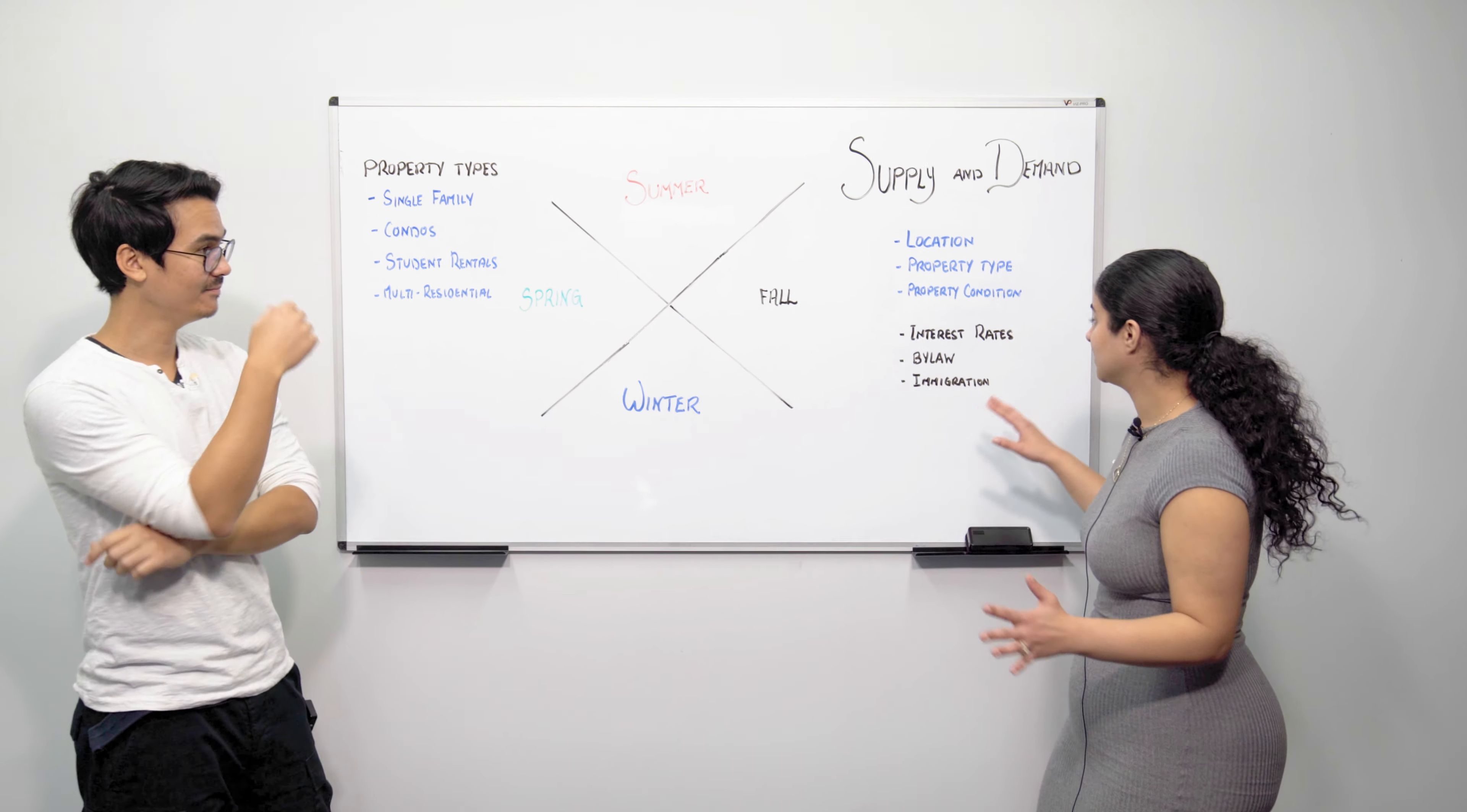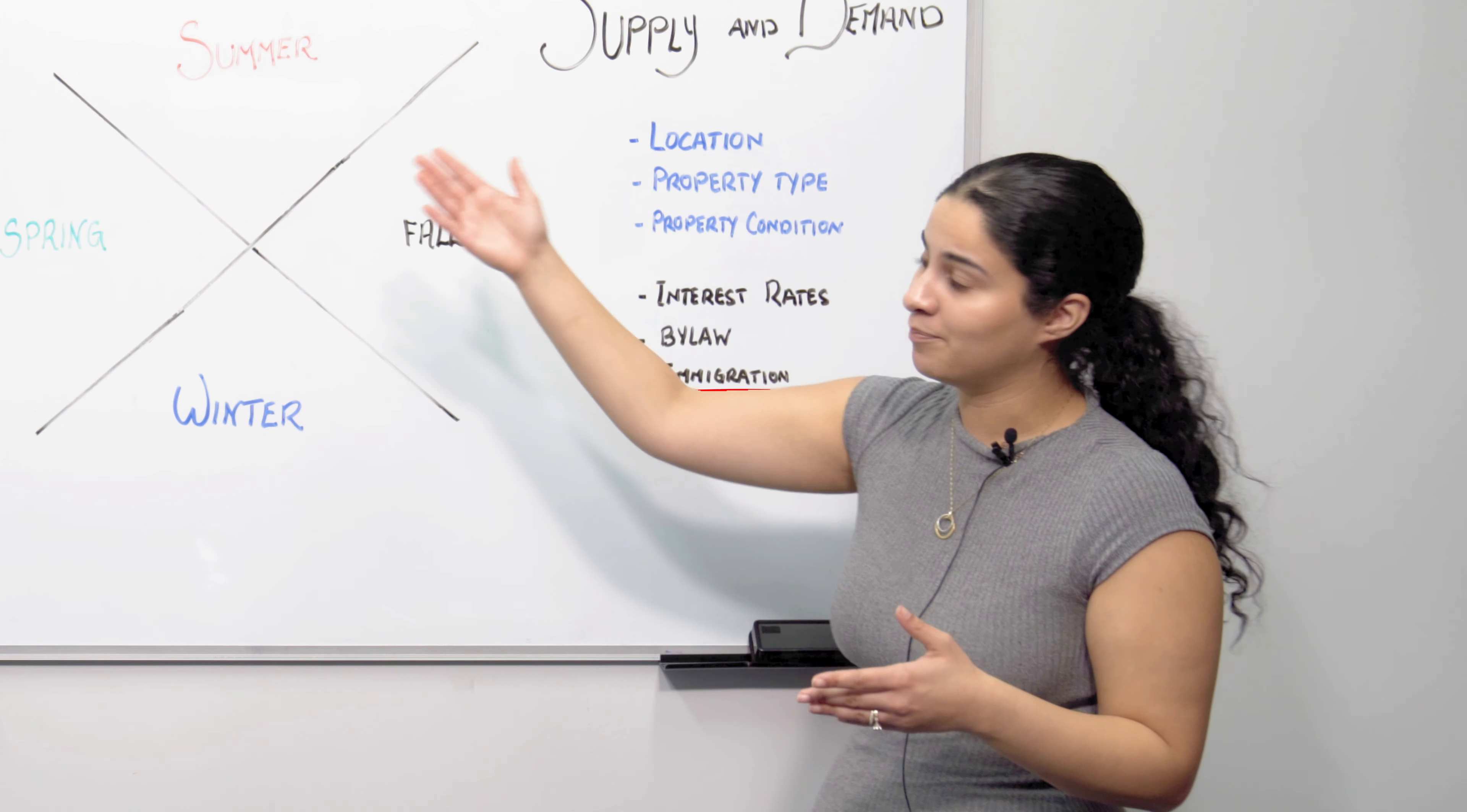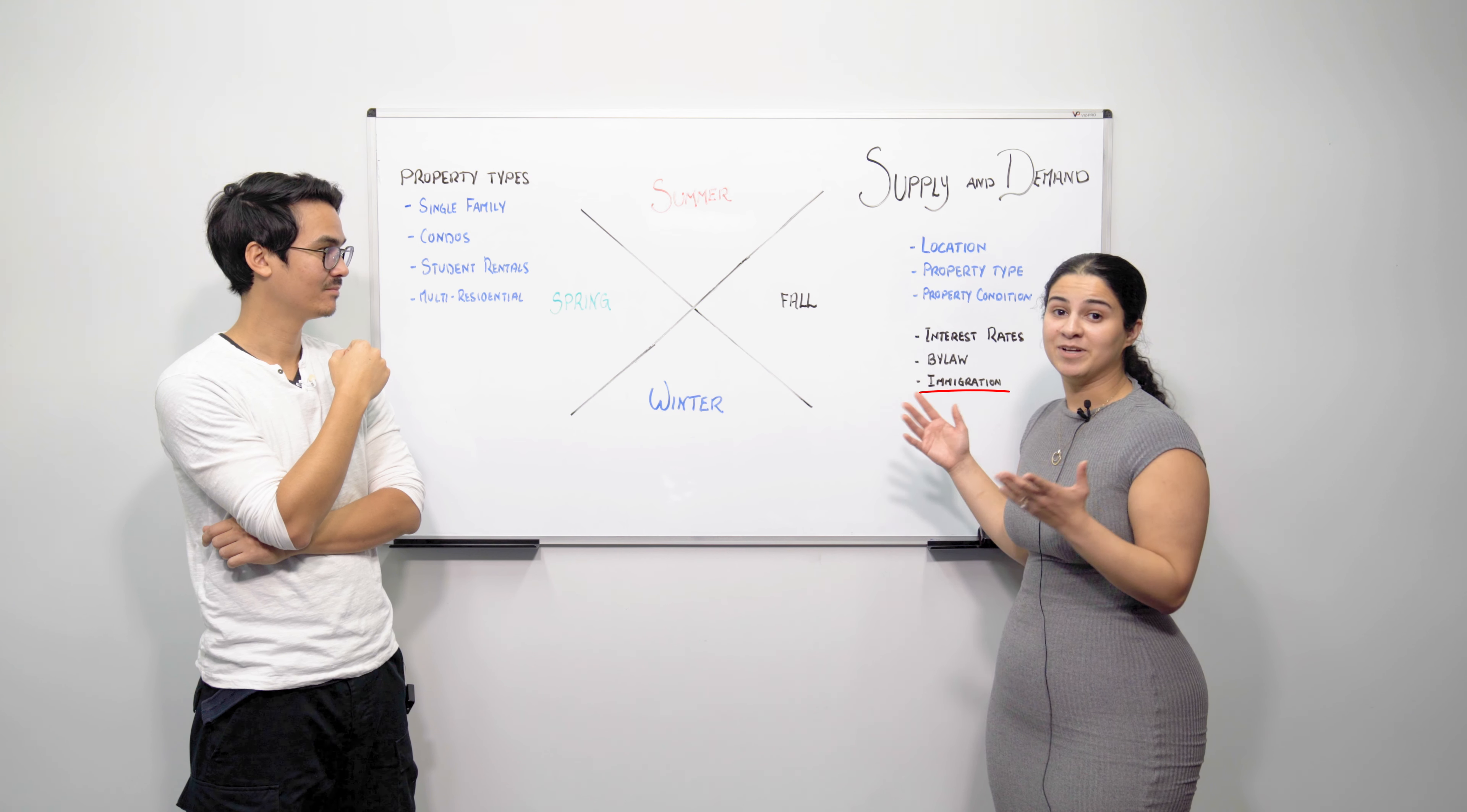Yeah and finally we can talk about immigration. I know you touched on it a bit earlier Andrew, but immigration will play a big factor in supply and demand, mostly in demand, because when people are immigrating over to Canada they're going to need a place to live. And so that'll impact the single family and the condo side of the properties because they're going to want to move into a single family home or even a condo if they have a smaller family. And so immigration is not dependent of the seasons, again it depends on government immigration policies.